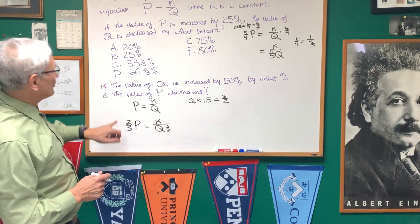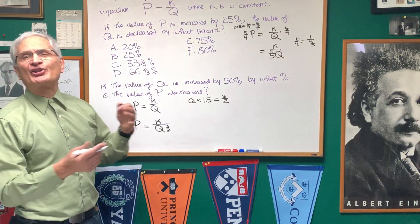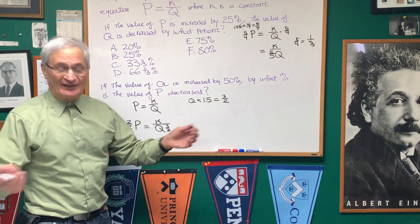So, the solution to the second question here is, by what percent is the value of P decreased? 33 and a third percent. And there we are.